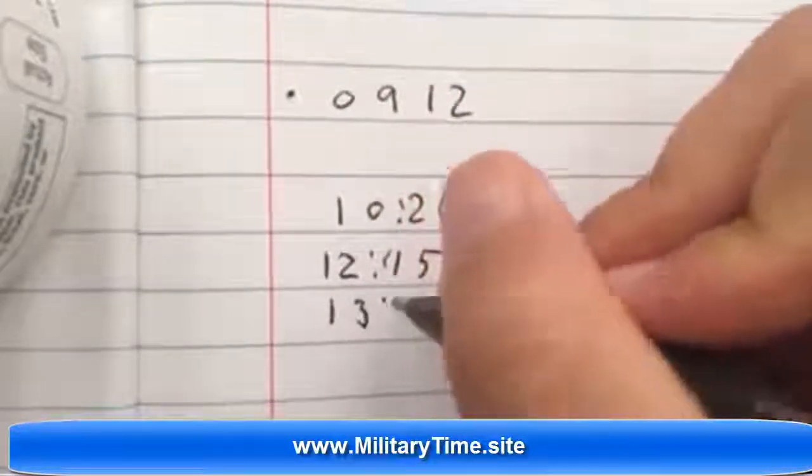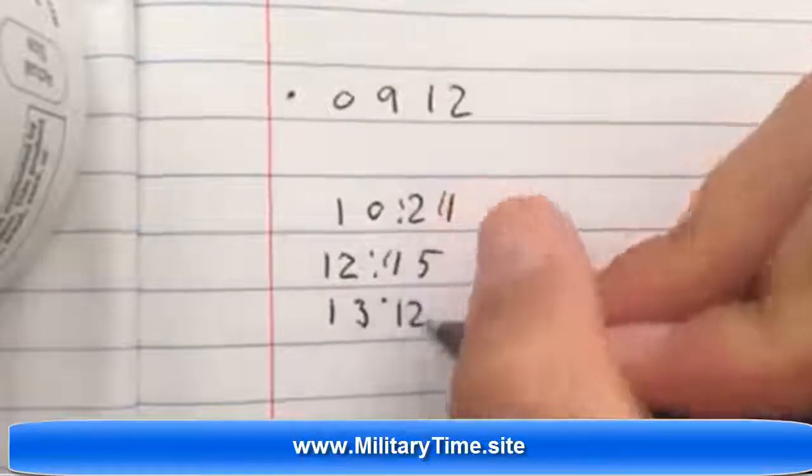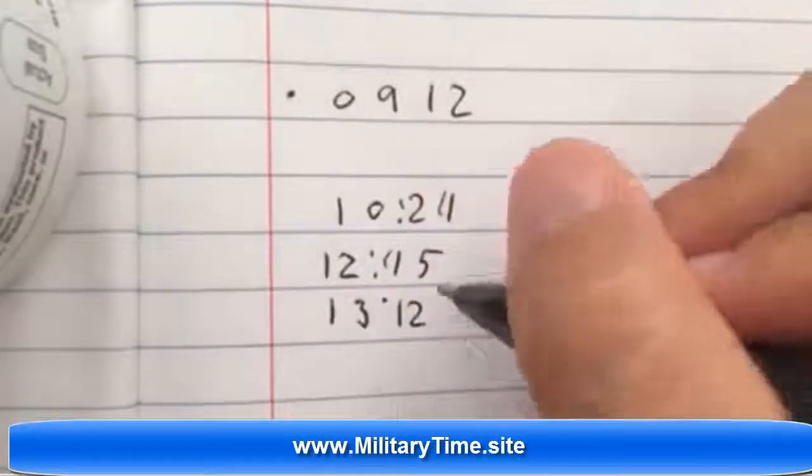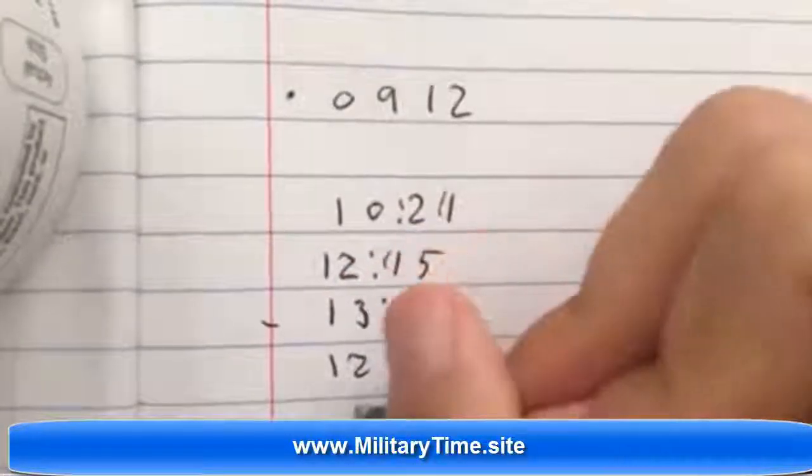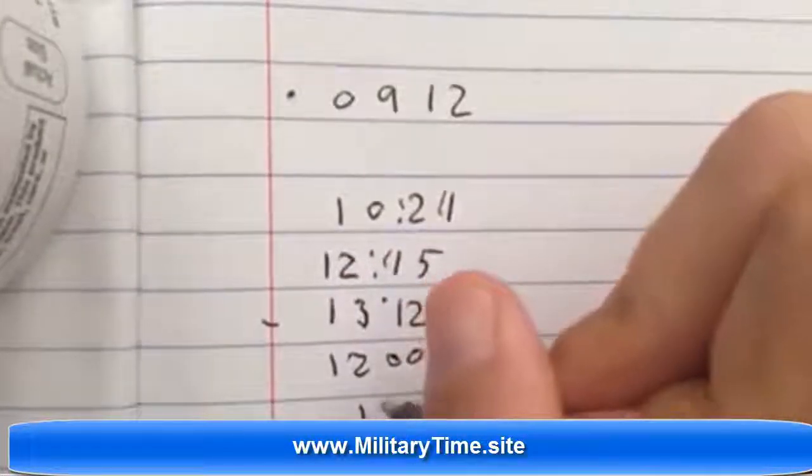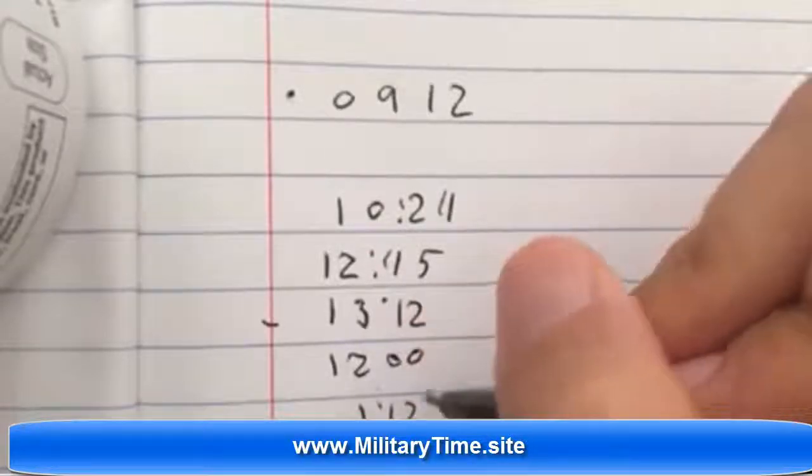Let's say 1312 military time. You just take away 12. So you're going to subtract 12 and you're going to end up with 112. So it's 1:12 in the afternoon.